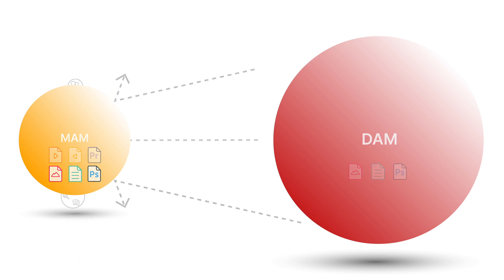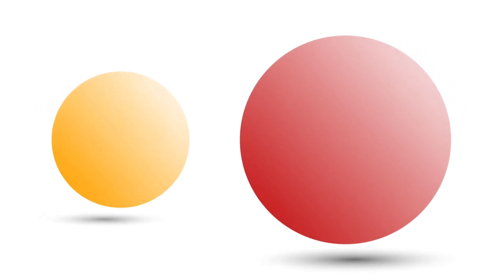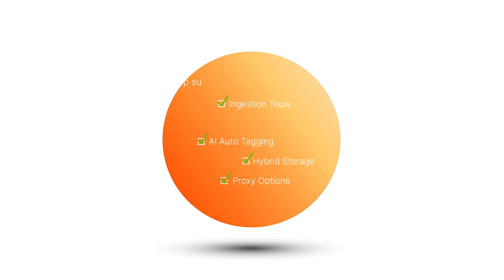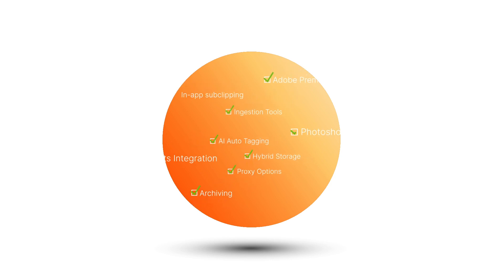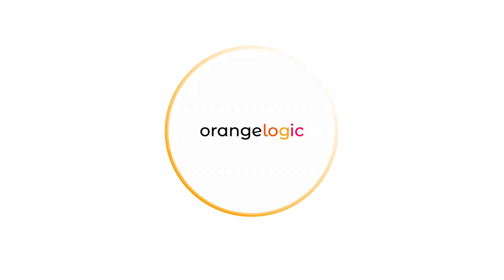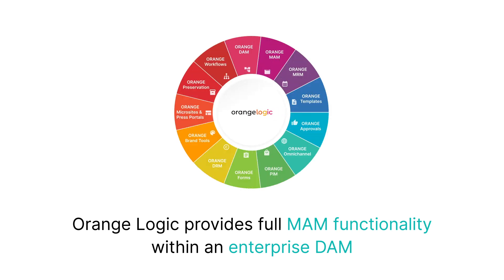What Morgan needed was a unified, full-featured platform that truly understood the needs of video production teams — ingestion tools and AI autotagging, extensive proxy options, hybrid storage, automated archival processes, chapters and subclips, and so much more. What Morgan needed was OrangeLogic, the first and only solution to provide a full-featured MAM alongside a company-wide asset management system.